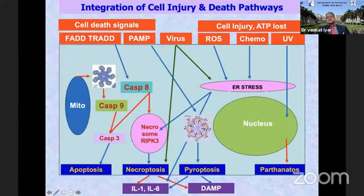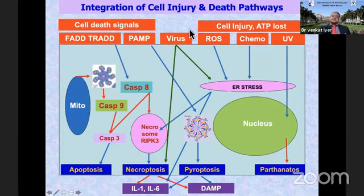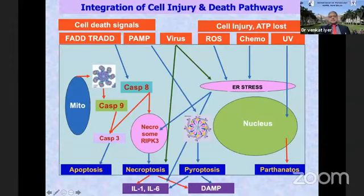I have made a diagram to explain the newer concepts in cell injury — it is a complicated diagram. This box is again the cell; this is the outside of the cell membrane; this is the nucleus, the endoplasmic reticulum, the mitochondria — which are the central actors. Various cell signals — death signals, injury signals, or ATP loss — all converge on a cell to cause changes in the cell membrane and signal transduction or membrane dysfunction.